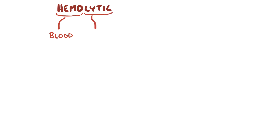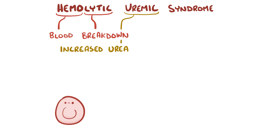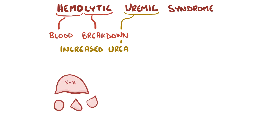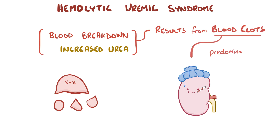Hemo refers to the blood, lytic refers to breaking down, and uremic refers to increased urea levels in the blood. This helps explain hemolytic uremic syndrome because the two main effects are destruction of red blood cells and the declining function of the kidney, causing uremia — both of which result from tiny blood clots that form in tiny blood vessels, predominantly in the kidneys.